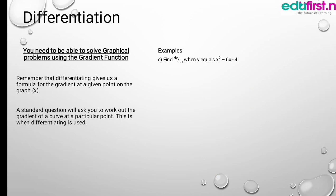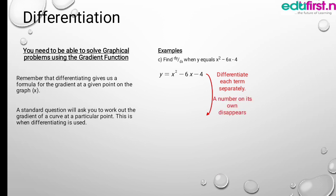Then the next question: find the derivative when y equals 2x cubed minus 6x minus 4. We keep the constant terms separate — a number on its own disappears because it is a constant. So the derivative gives us dy/dx equals 2x squared minus 6. The 4 is constant, so it disappears. This means dy/dx is our gradient function.